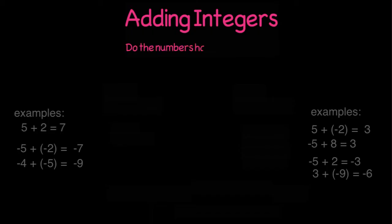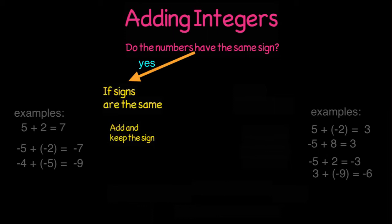Did you notice that in situations where both numbers had the same sign, we simply added the digits and kept the sign? So a positive plus a positive resulted in a positive answer, and a negative plus a negative gives you a negative answer.